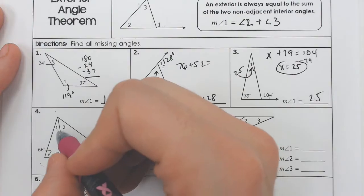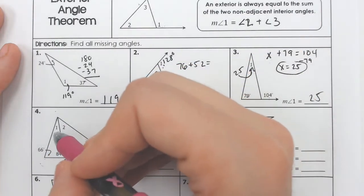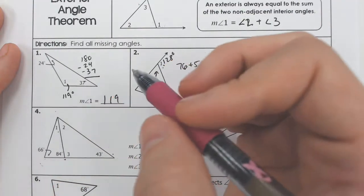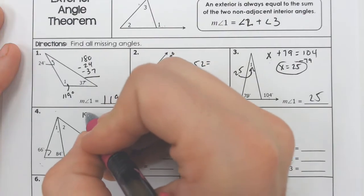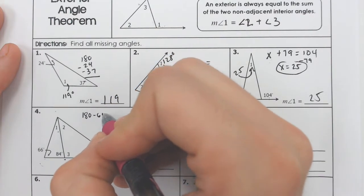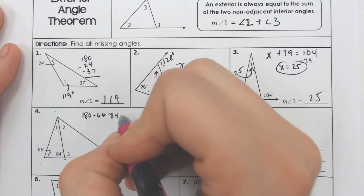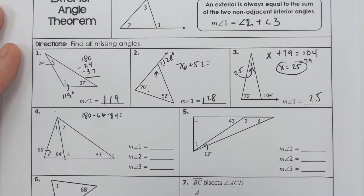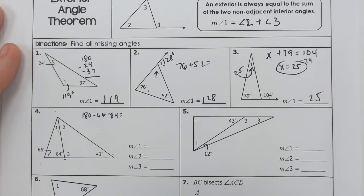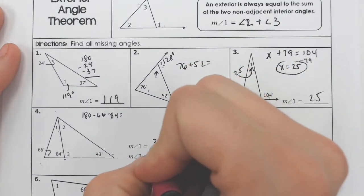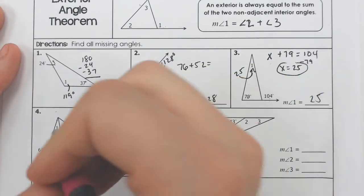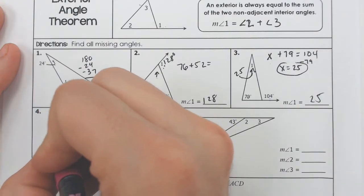So the first thing I'm going to do is just find the part that looks the easiest. So find what has the most information. And what has the most information to me that stood out the most is this little triangle right here. If I want to find out angle one, all I need to do is take away 66 and 84 away from 180. So 180 minus 66 and minus 84, that would get me angle one, which is apparently 30 degrees.